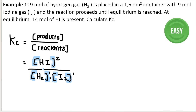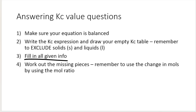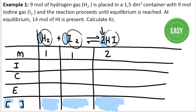Now I fill in my given information. The question says nine moles of hydrogen gas is placed in a 1.5 cubic decimeter container with nine moles of iodine gas. We have to read the question and understand that we start off with nine moles of hydrogen gas and nine moles of iodine — those go in the initial row. The volume of 1.5 cubic decimeters is important later when we calculate concentration, because concentration equals moles divided by volume.